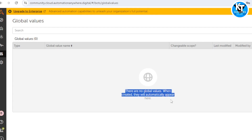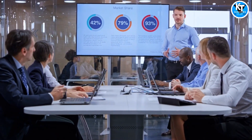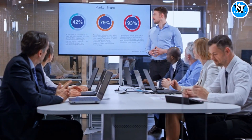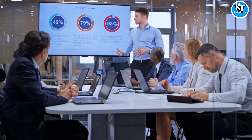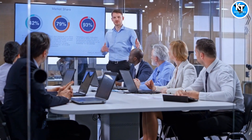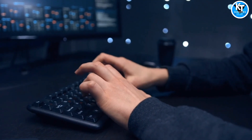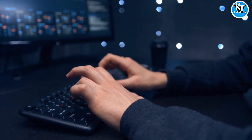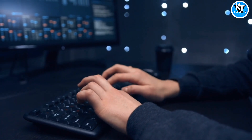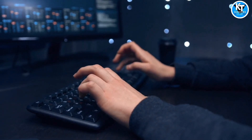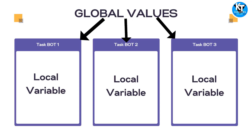As of now there are no global values, so when we create one it will automatically appear here. First, let's understand what a global value is and why we use it. Global values enable users to reuse identical values between bots, instead of creating a new variable for each bot. So if there is any value which is common across all bots, instead of creating a variable in each bot, we can create a global value and use it across all bots.